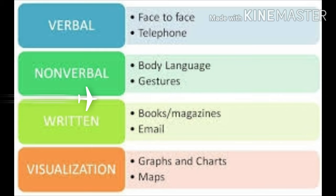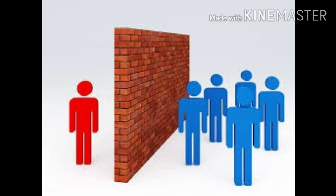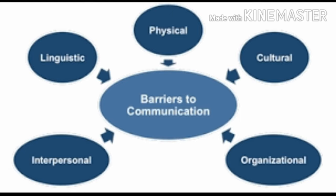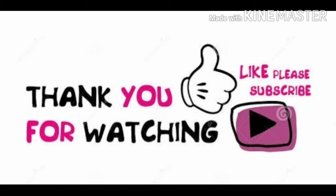In the same series, there are some barriers of communication — these are ways by which our communication process is not successful, so we have to avoid these barriers. When a person is not able to communicate with others due to some reason, these barriers are divided into different categories: linguistic, physical, cultural, organizational, and interpersonal barriers. These are the main barriers involved in communication. I hope you learn and gain more knowledge about communication.